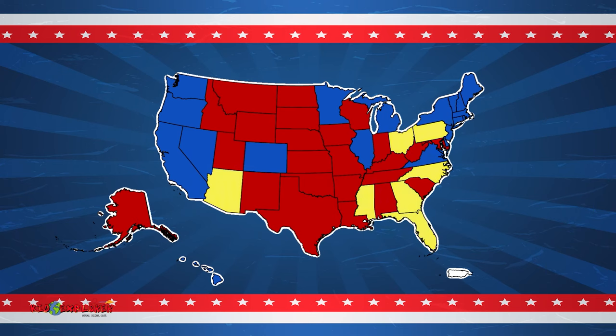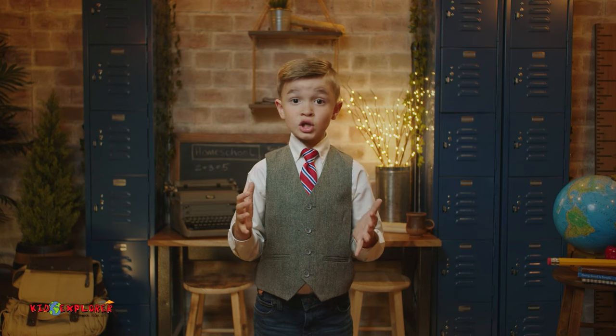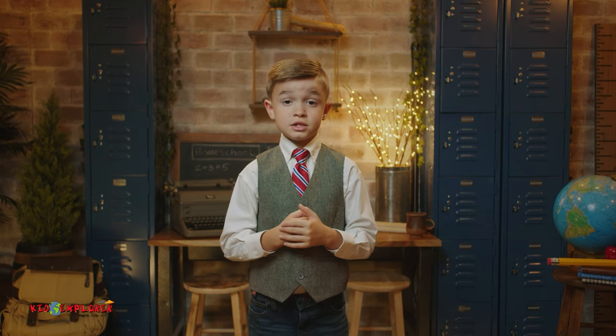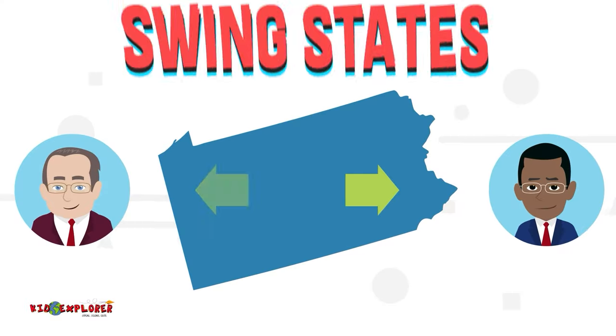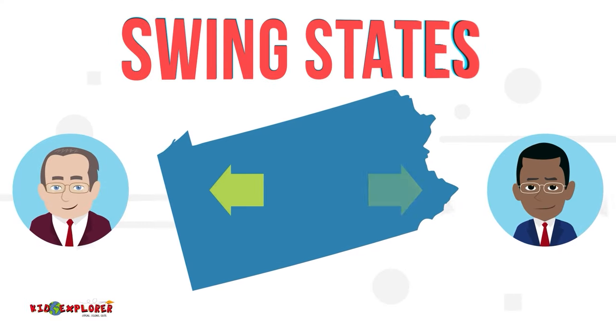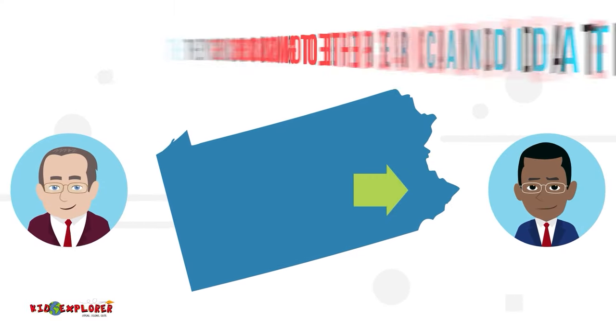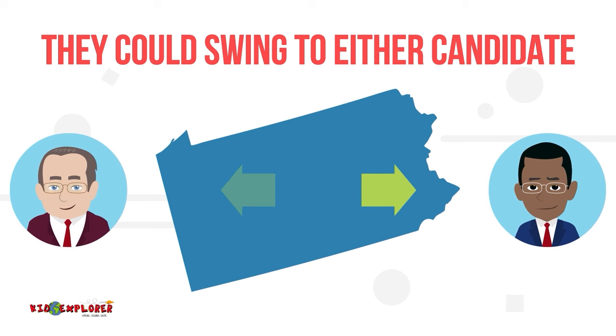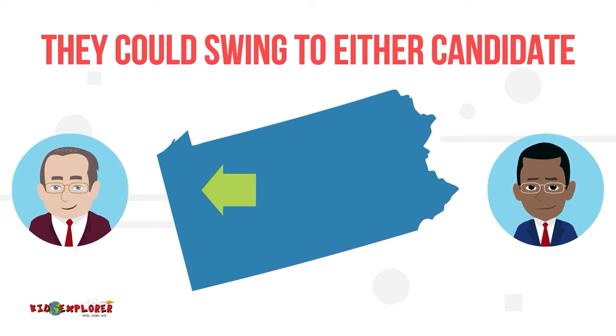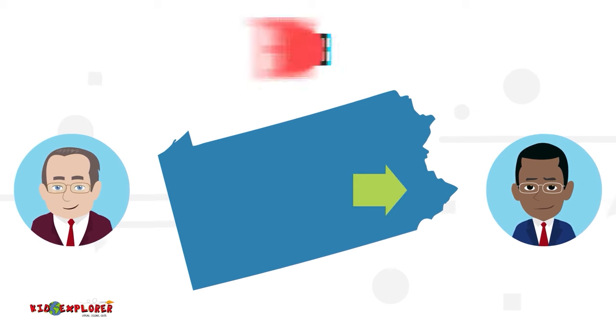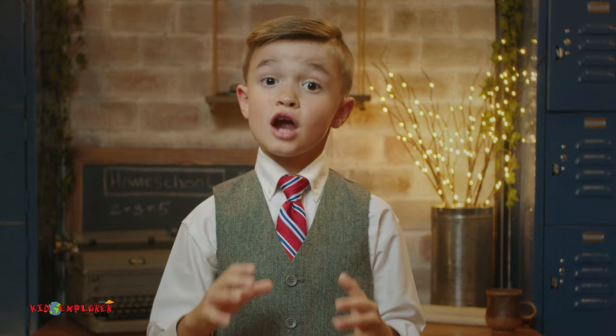Often in close races, there are a handful of states that can decide who will win the election, and it usually comes down to some of the smaller states. Those states are known as swing states, which means they can swing to one candidate or the other — meaning that their state race is going to be super close.